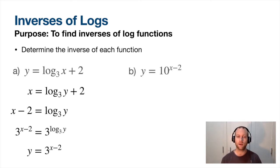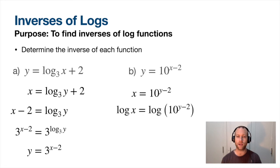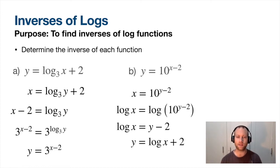Let's try this one: y equals 10 to the power of x minus 2, and I want to get the inverse. Switch x and y, then solve for y. Take the log of both sides - log base 10 of 10 cancels out and I'm left with y minus 2. Add 2 to both sides: y equals log of x plus 2. Getting inverses - the process is not too tricky.